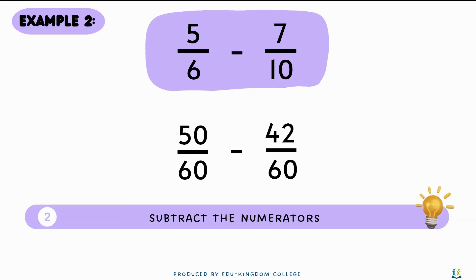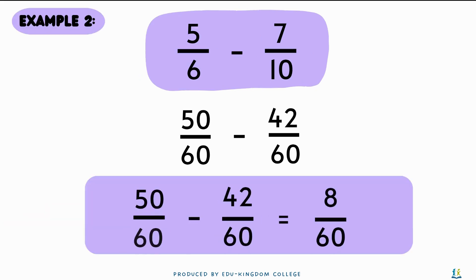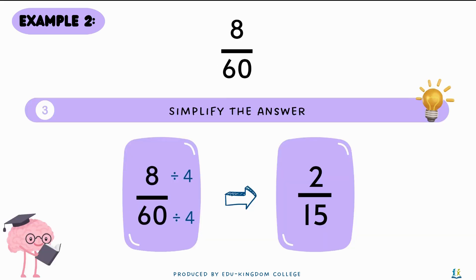Then we subtract the numerators: fifty minus forty-two gives eight. The denominator remains the same, so we get the fraction eight over sixty. Then we simplify the answer — the highest common factor of eight and sixty is four, so the final answer is two over fifteen.